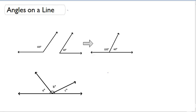Angles on a line always add up to 180 degrees. That's because angles on a line form a straight angle and a straight angle always measures 180 degrees.